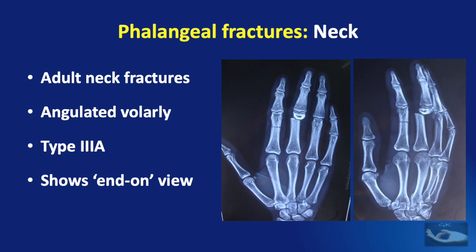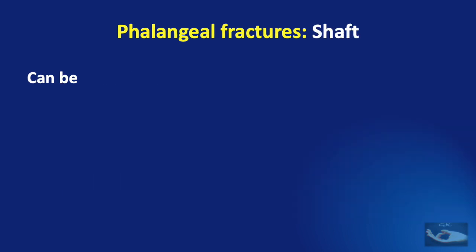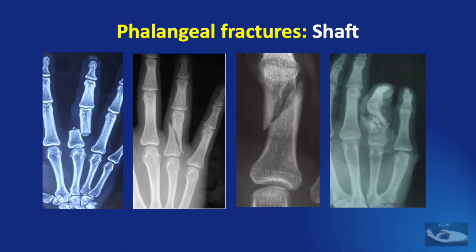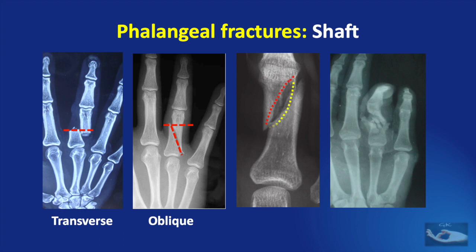What we see on the X-ray is an end-on view of the rotated distal fracture fragment. Fractures of the shaft of the phalanx — either middle phalanx or proximal phalanx — can be transverse, spiral, oblique, or comminuted. In a transverse fracture, the fracture line is perpendicular to the axis of the bone. In an oblique fracture, the axis of the fracture is at more than 30 degrees to the perpendicular. In a spiral fracture, the fracture line on the dorsum of the phalanx is not the same as the fracture line on the volar aspect.